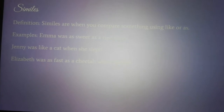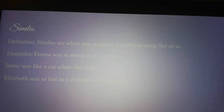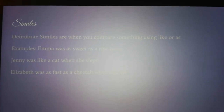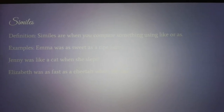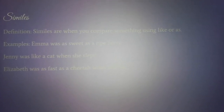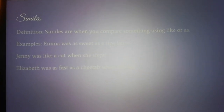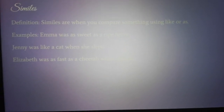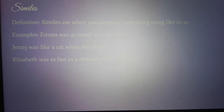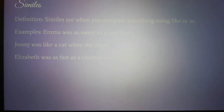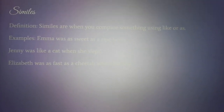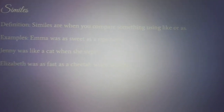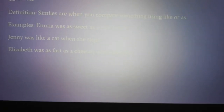Similes are one of the most common types of figurative language. Similes are when you compare something using "like" or "as." Some examples are: Emma was as sweet as a ripe berry, meaning Emma was very sweet. Jenny was like a cat when she slept, meaning she slept a lot and was a very deep sleeper, similar to cats. Elizabeth was as fast as a cheetah when she ran — cheetahs are one of the fastest animals, so it's saying Elizabeth was a very fast runner.